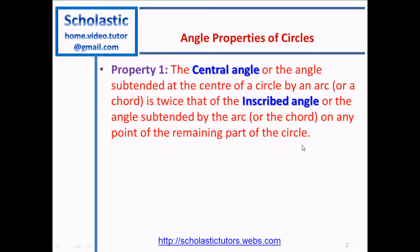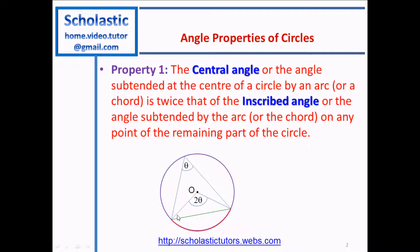What does this mean? The central angle is the angle subtended by this chord, which is shown in green, or the arc shown in red. Basically the distance from here to here is the same, so that will subtend an angle of 2θ at the center, which is called the central angle.